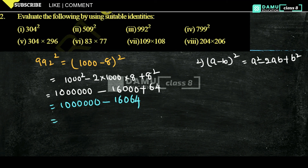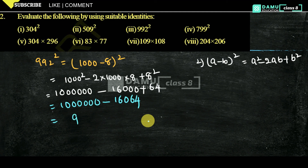So we take 1,000,000 minus 16,000 plus 64. That means 1,000,000 minus 16,000 gives 984,000, and then we add 64. So 1,000,000 minus 16,064 equals 983,936. That is the answer for 992².